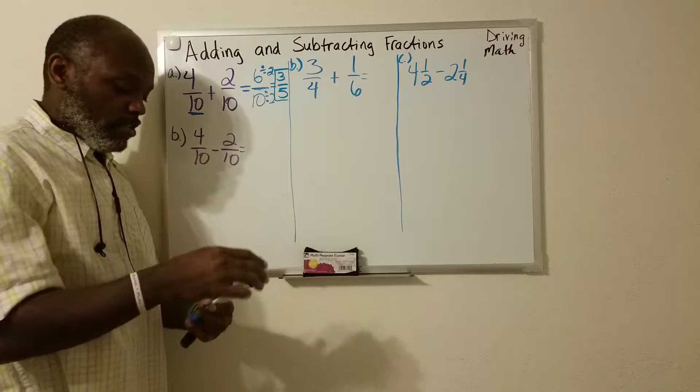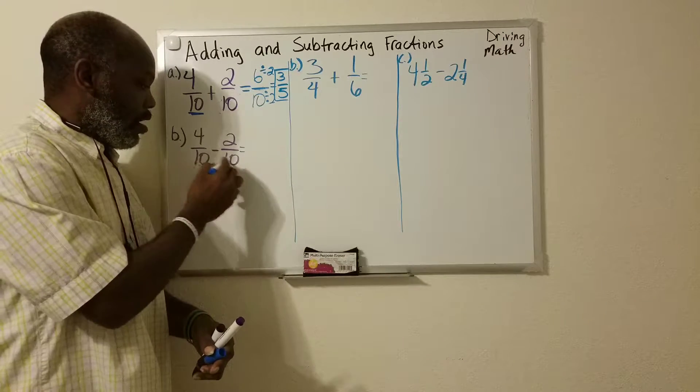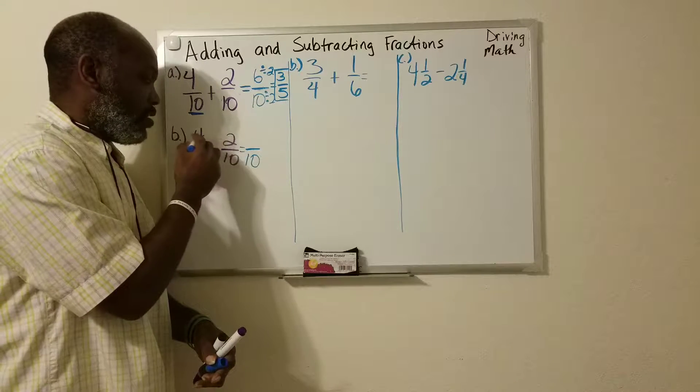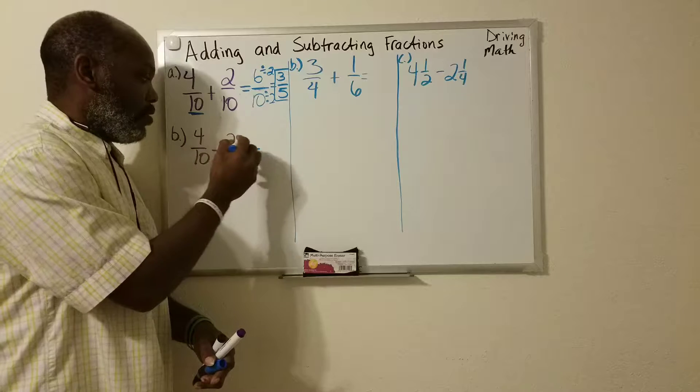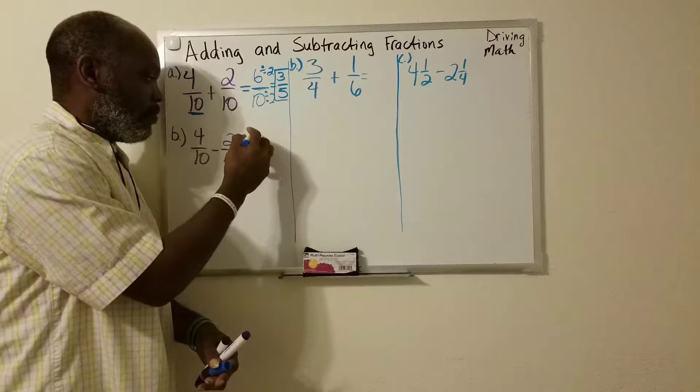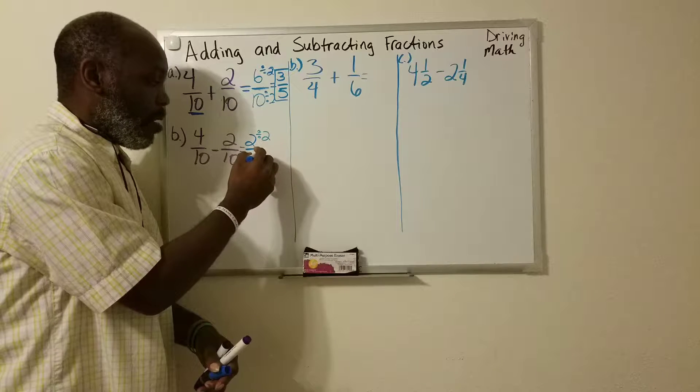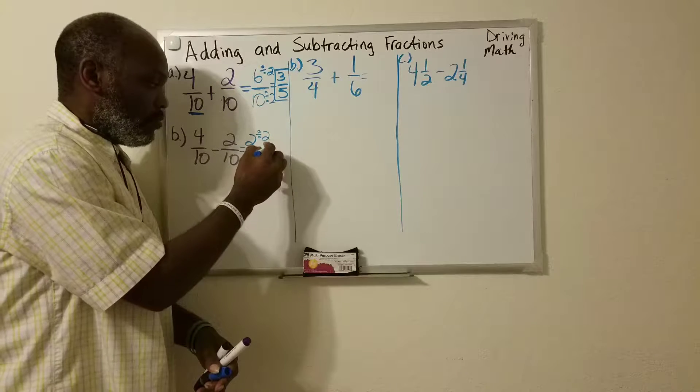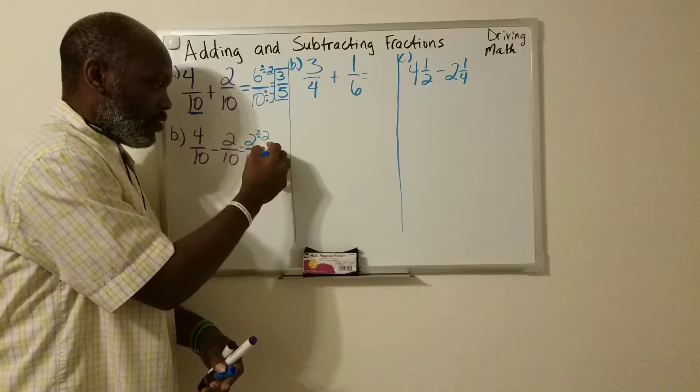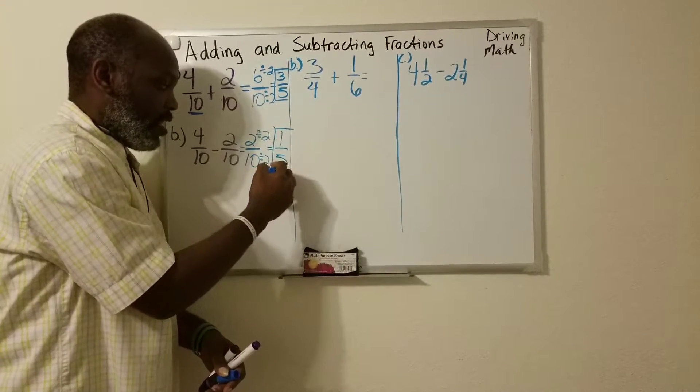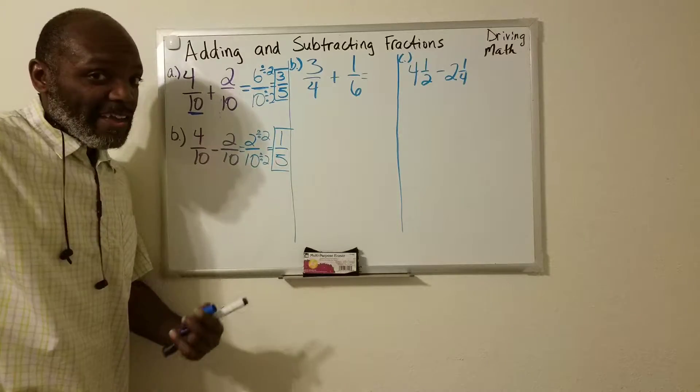Same process with subtraction. The denominators are the same, so we're going to keep the denominator 10. And then we just subtract the numerators. 4 minus 2 is 2. We can reduce these fractions. The greatest common factor is 2. 2 divided by 2 is 1. 10 divided by 2 is 5. And that is reduced.